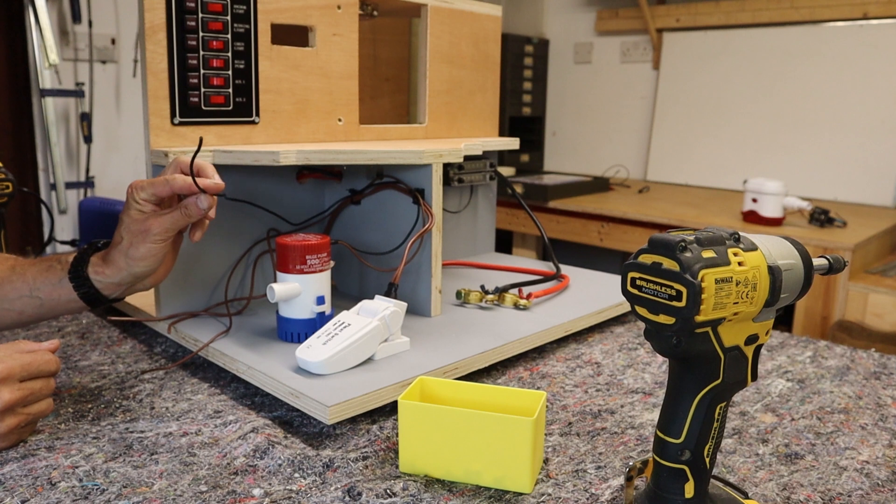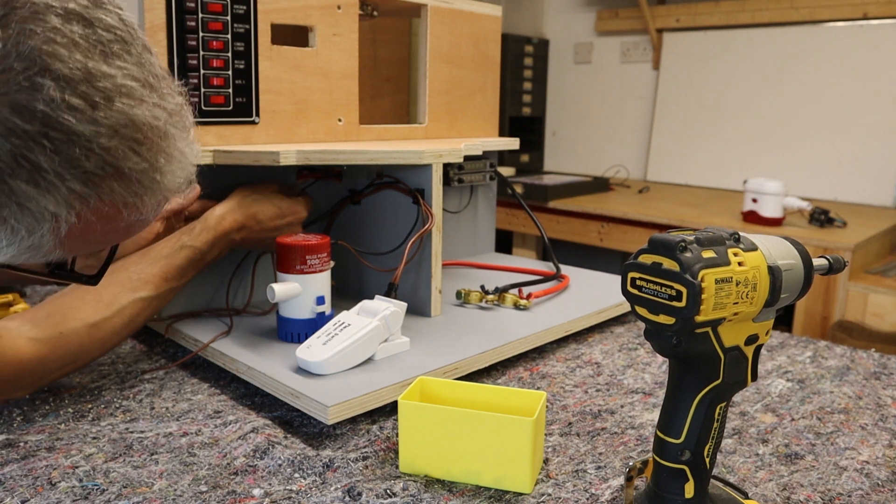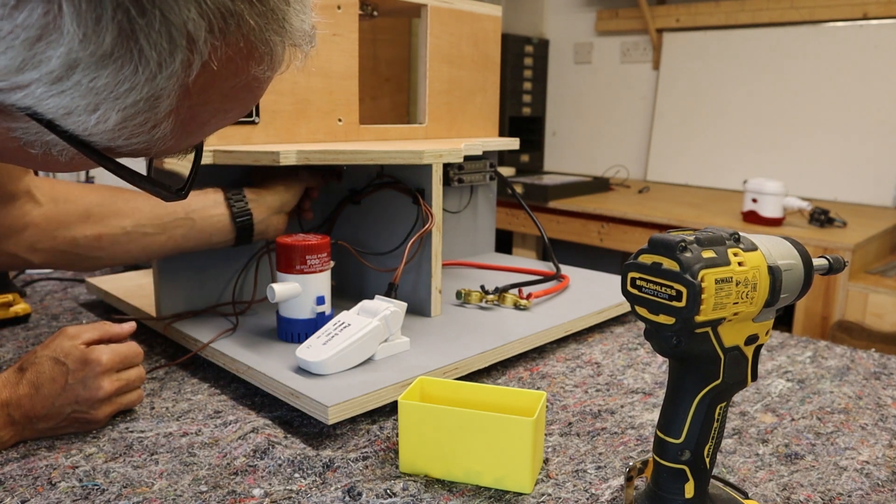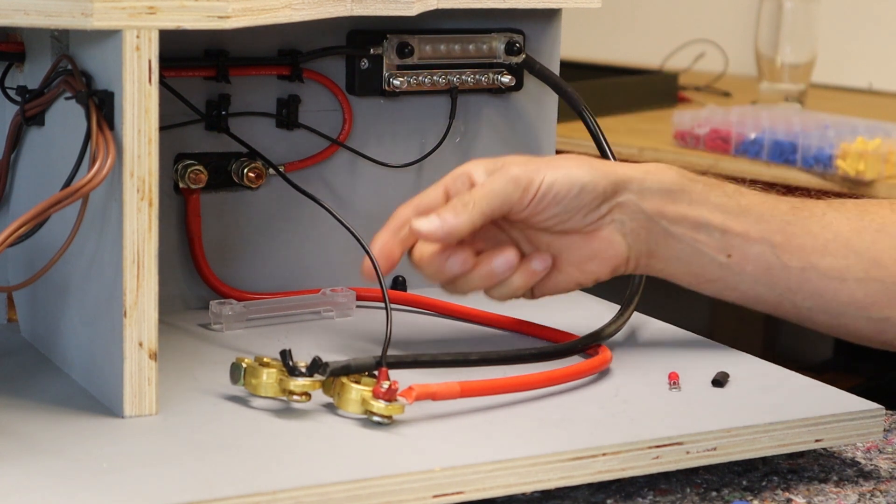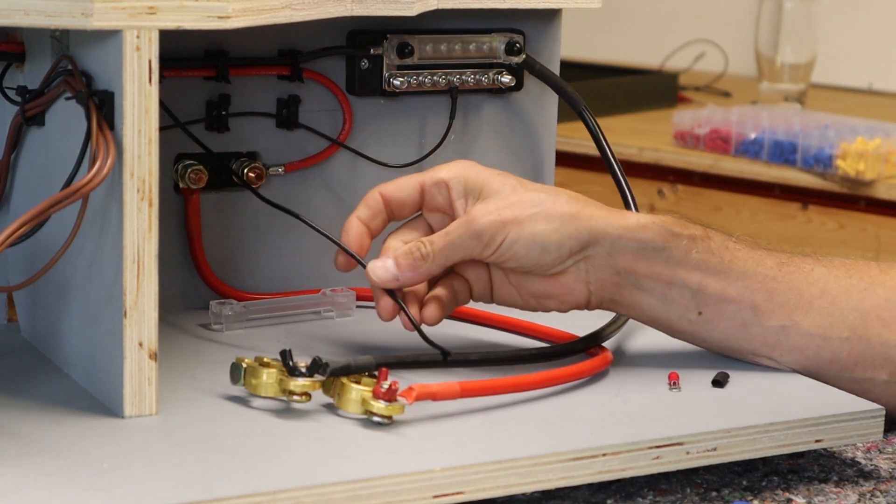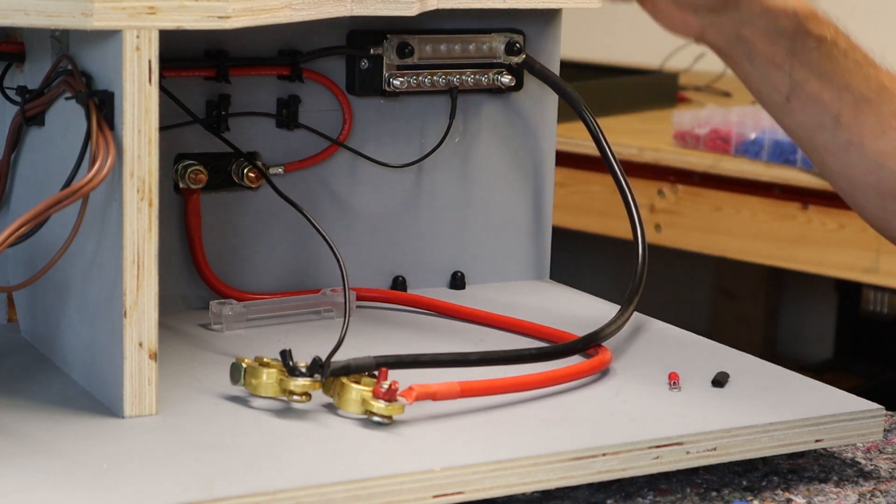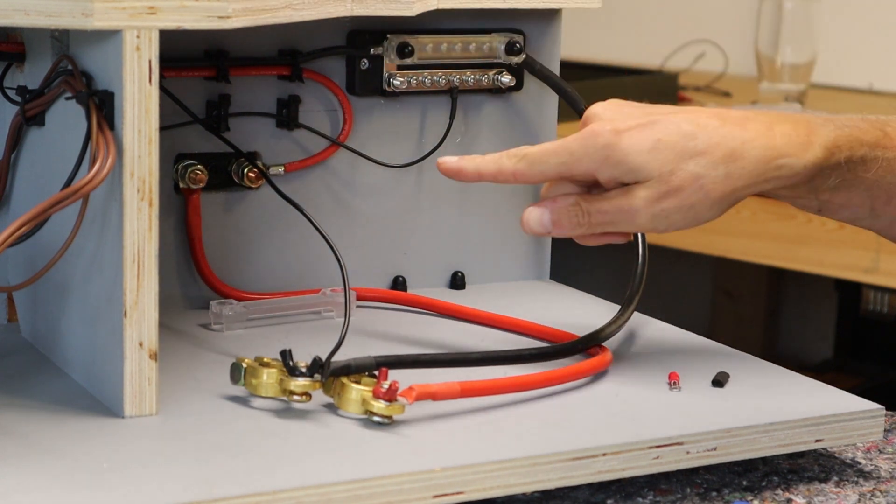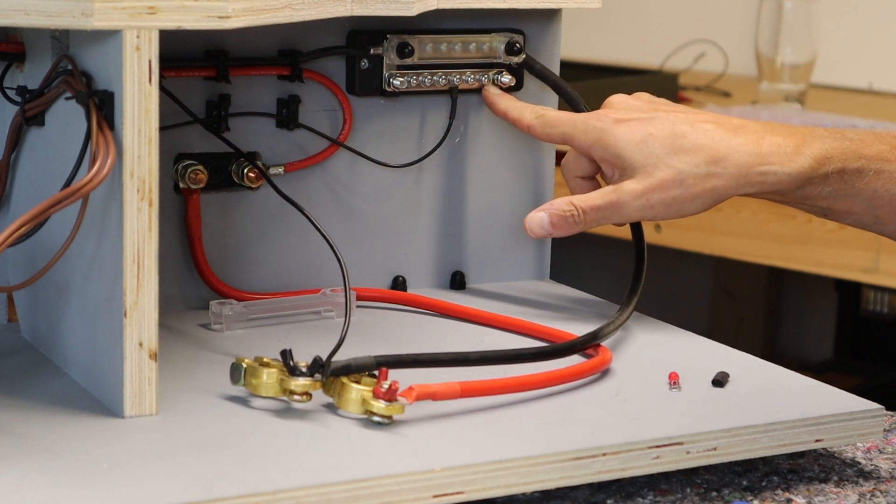So I'm going to take the negative from the bilge pump, feed it through the bulkhead and then I can take care of the connection. Okay, so here in the engine bay side of things I've got my negative wire. I'm going to connect it to the buzz bar. I'm going to use the same convention I did for the overhead light. Count the switches down and we're going to use the bottom switch which is number six - one, two, three, four, five, six. We're going to use this end position here.